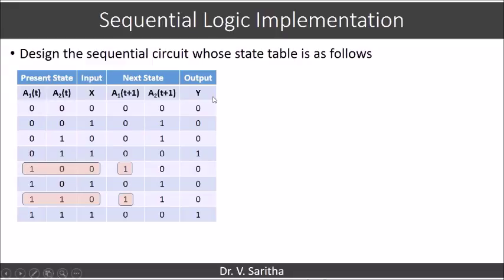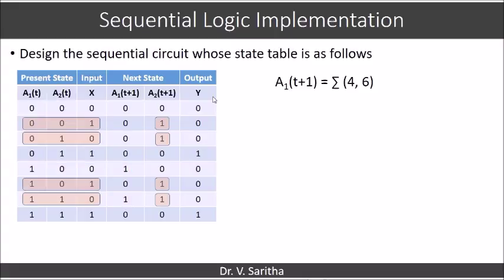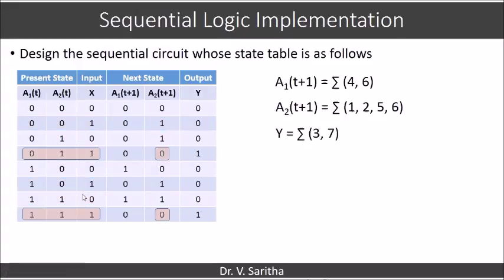So, first we are writing the min terms. So, if you see a1 of t plus 1 will get sigma of 4 comma 6 and if you see a2 of t plus 1 will get sigma of 1, 2, 5, 6 and if you see for y will get sigma of 3 comma 7. Using the sum of min terms, we will get the expressions for a1 of t plus 1, a2 of t plus 1 and y.